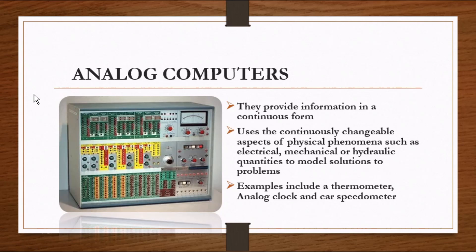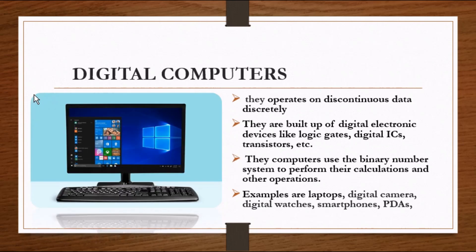mechanical, or hydraulic quantities to model problems being solved. They provide information in a continuous form. Examples include the thermometer, the analog clock, and the car speedometer. Next, we have the digital computers. Digital computers operate by counting, and all